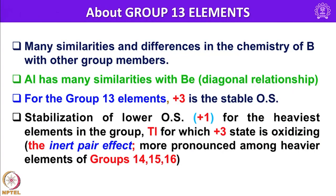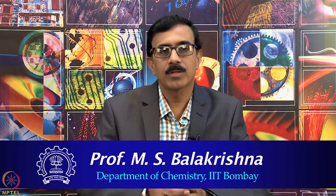Let us look into some similarities between boron and rest of the elements in the series. Aluminum has many similarities with beryllium that we already discussed about diagonal relationship. For the group 13 elements plus 3 is the most stable oxidation state, and stabilization of lower oxidation state that is plus 1 for the heaviest elements in the group appears in the case of thallium, for which in fact plus 3 oxidation state is oxidizing. Here for the first time the term inert pair effect is introduced among the p-block elements. More and more elements heavier elements of group 14, 15 and 16 show this inert pair effect. It is very interesting to understand and correlate inert pair effect with respect to the reactions and stabilization of lower coordination number that I am going to discuss in my next lecture. Until then thank you very much and have a pleasant reading of inorganic chemistry.